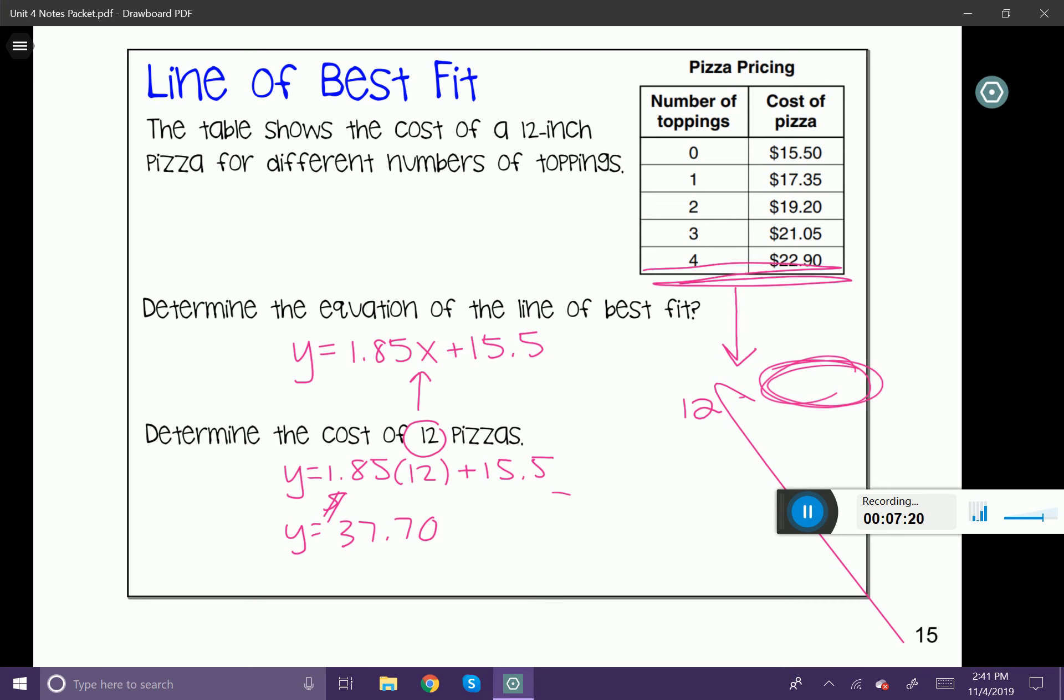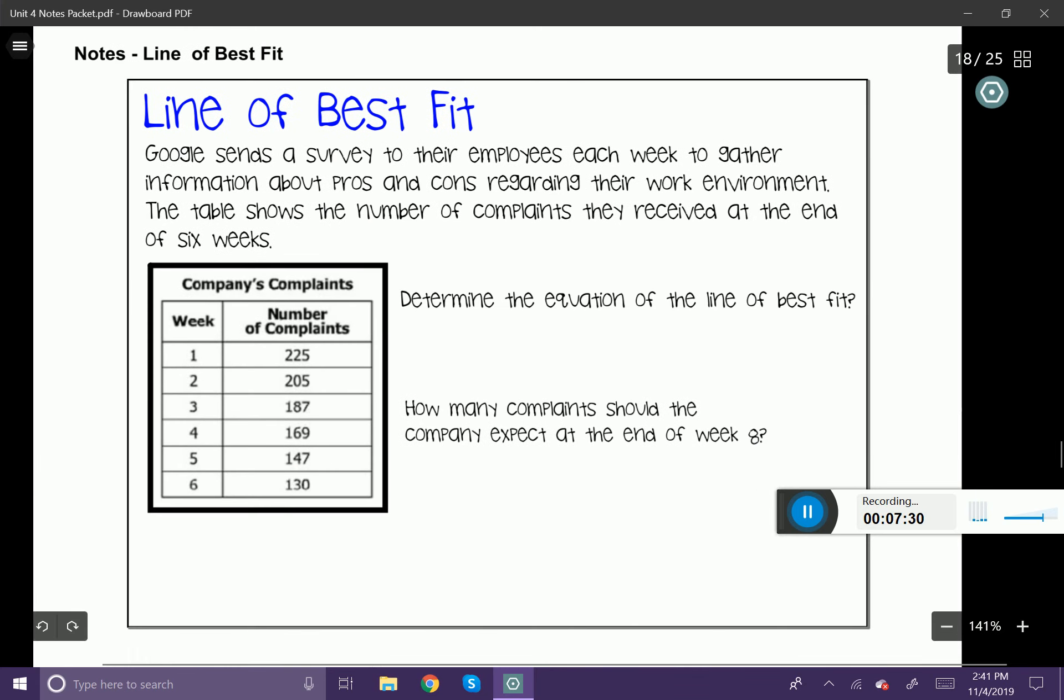Let's go ahead and try another one of these. Before you do anything, go ahead and clear your calculator. It's very important because many of the things in your calculator are unseen on your home screen. Google sends a survey to their employees each week to gather information about pros and cons regarding their work environment. The table shows the number of complaints they've received at the end of six weeks. Here's our data.